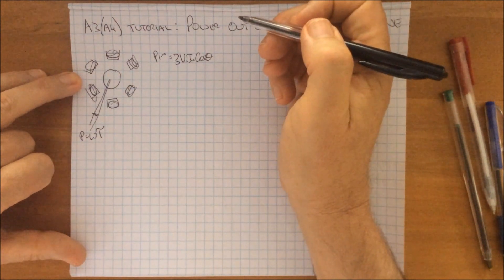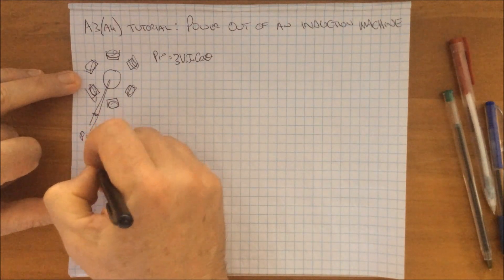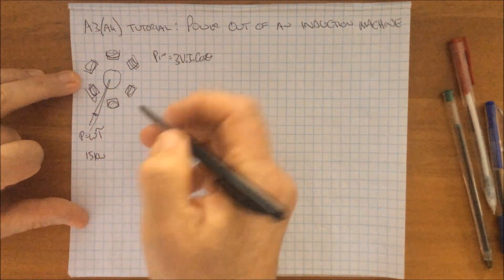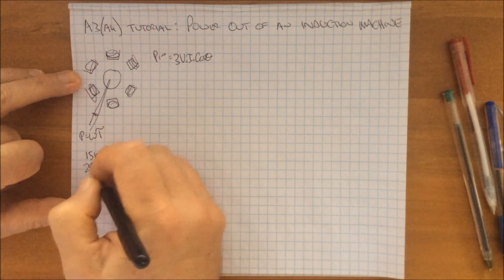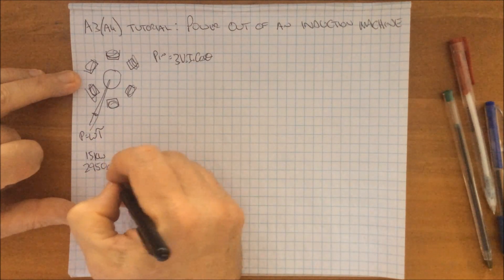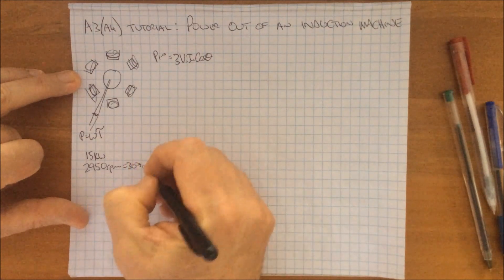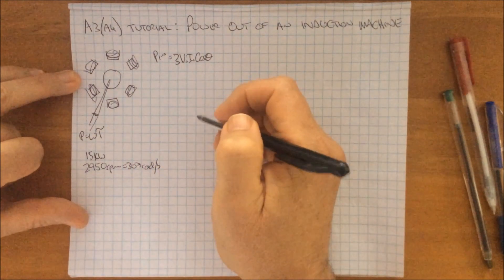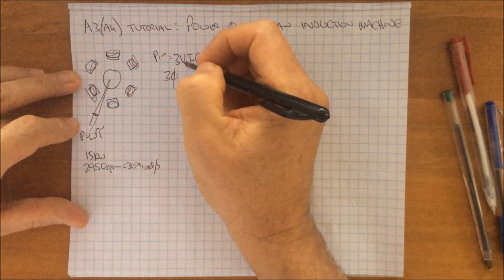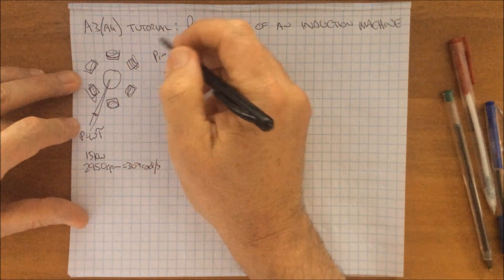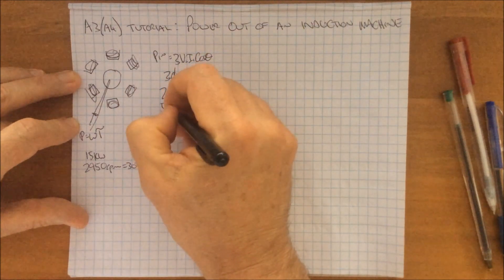Let's say for example that this machine is giving us 15 kilowatts — that's what it's giving us in the current situation — and it's doing that at 2950 rpm, which is roughly 307 radians per second. This machine is a three-phase machine, two-pole, because that's what I've drawn it as, and it's connected to a 50 hertz supply.